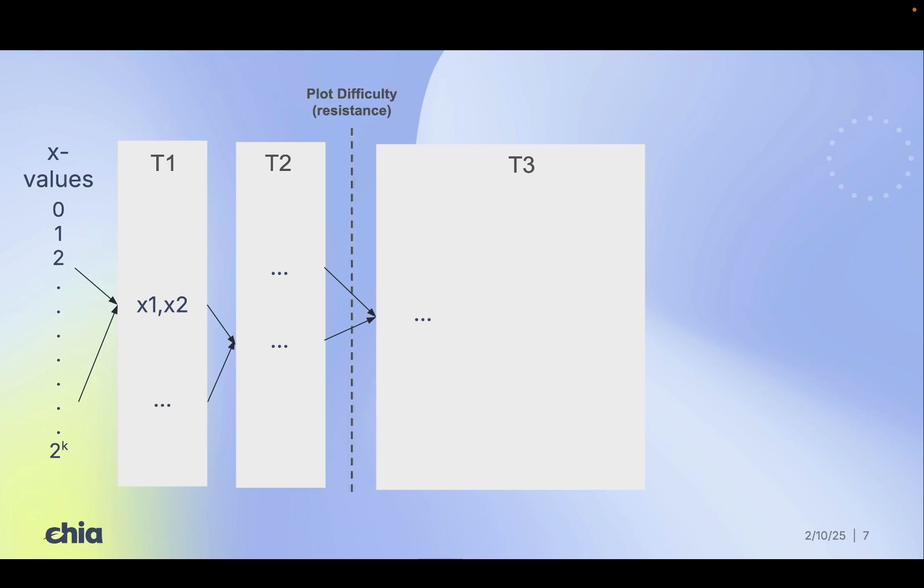We enforce the difficulty wall between T2 and T3, which serves as a grinding barrier. This is critical for preventing rental attacks.